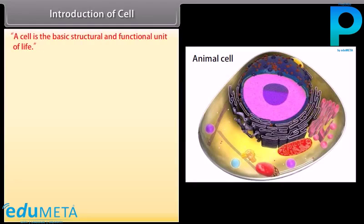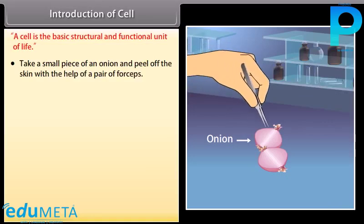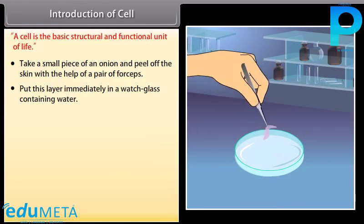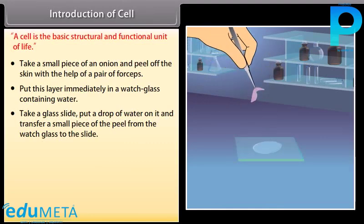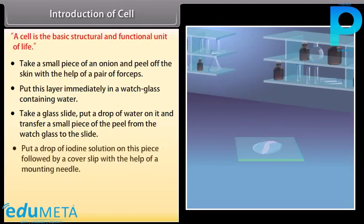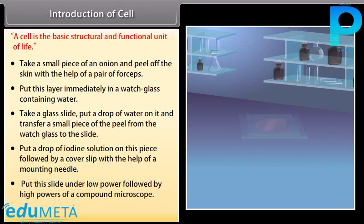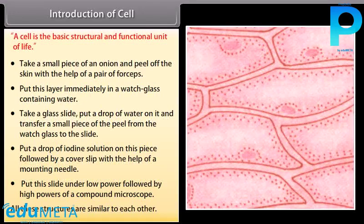A cell is the basic structural and functional unit of life. In an experiment, take a small piece of an onion and peel off the skin with a pair of forceps. Put this layer in a watch glass containing water, then transfer a small piece to a glass slide with a drop of water. Add a drop of iodine solution, cover with a cover slip, and observe under low and then high power of a compound microscope. All these structures are similar to each other.